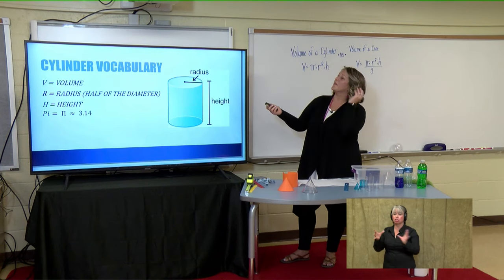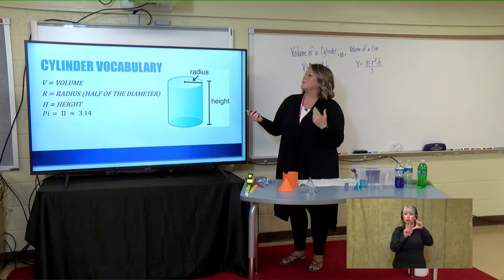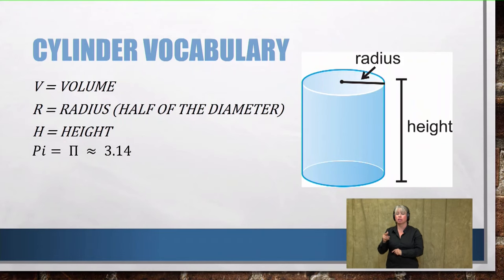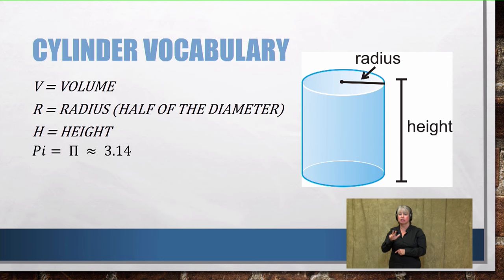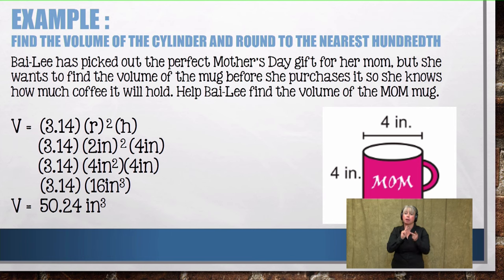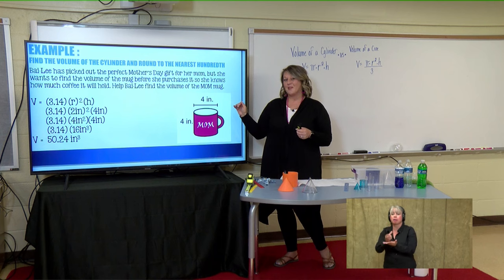Let's review the vocabulary. Volume is represented with a capital letter V. Radius is a lowercase r — it's half of the diameter. Height is a lowercase h. Pi is approximately 3.14 — that's what the squiggly lines mean — and the pi symbol looks like two little lines with a top. So let's take an example. Mother's Day is coming up, so Bailey wants to find the volume of a mug before she purchases it, so she knows how much coffee it will hold.